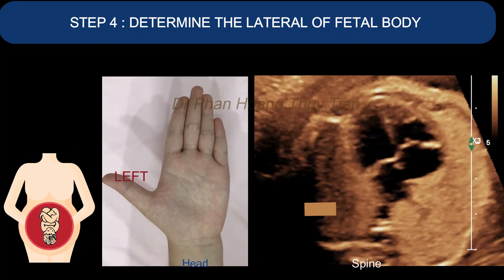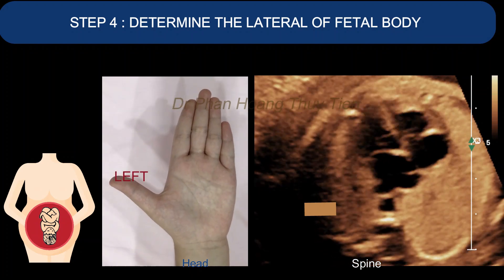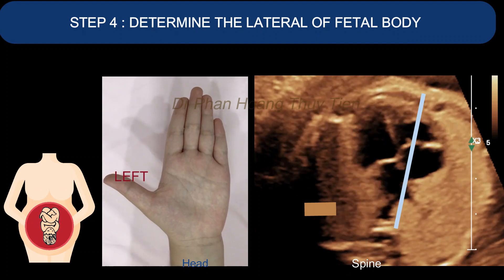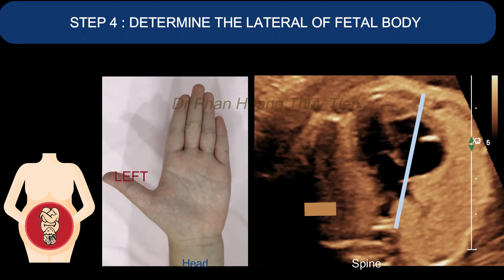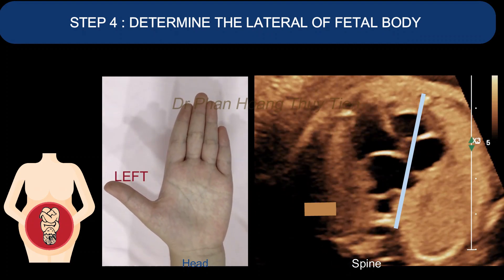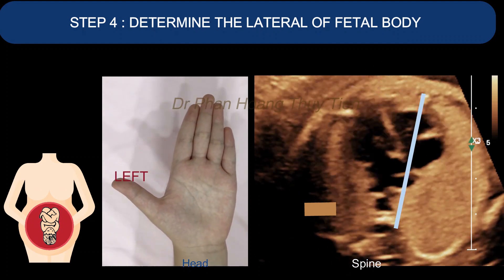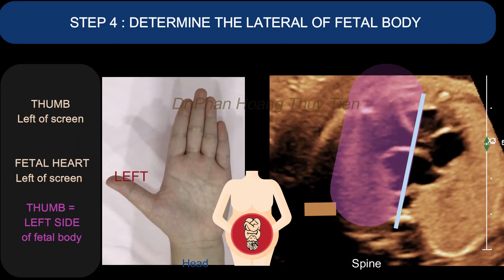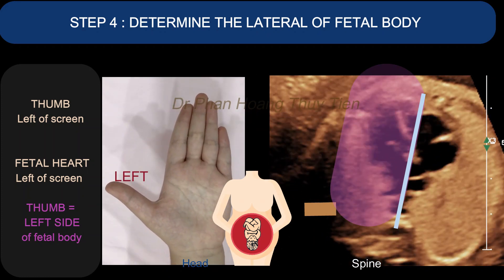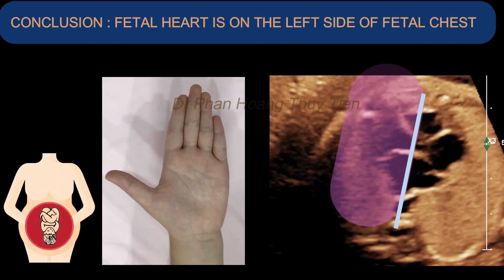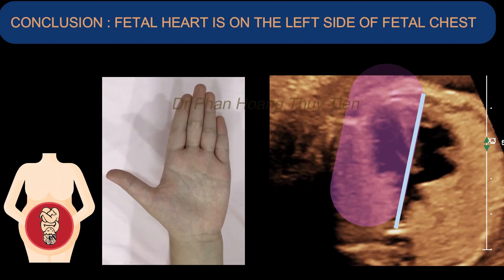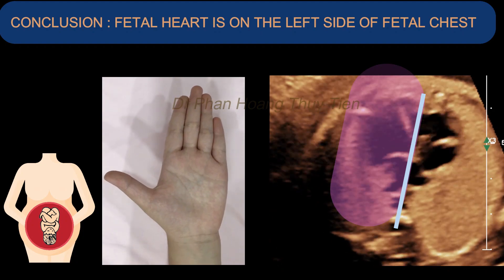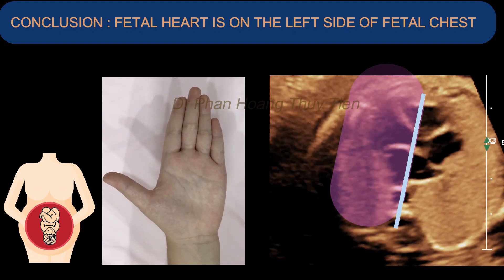With the transverse view, you need to create a straight line from the spine that divides the fetal body into half, then apply the technique. You will notice the thumb and heart are positioned accordingly, which leads us to the conclusion that the fetal heart is on the left side of the fetal chest.